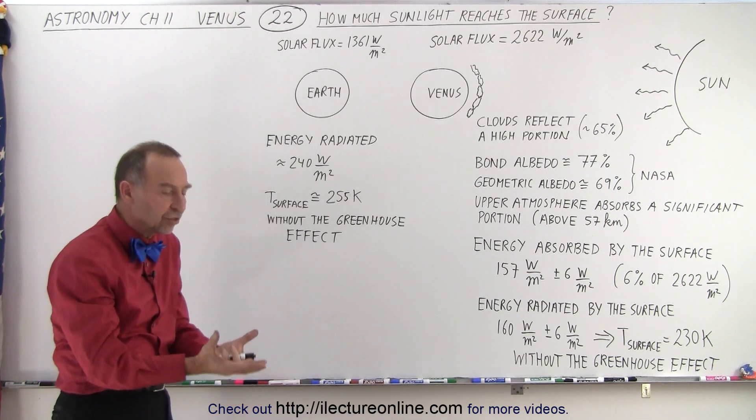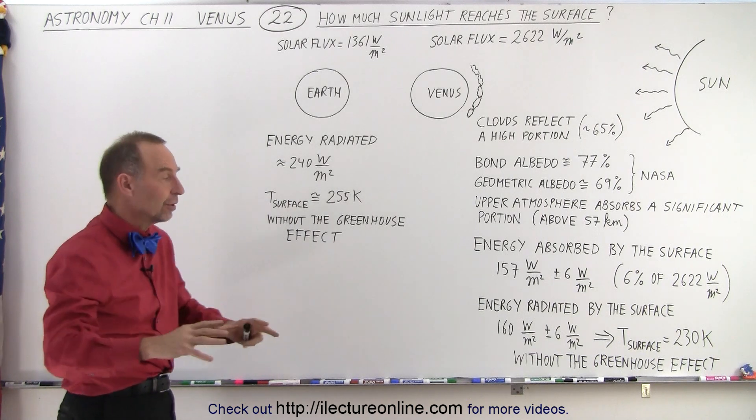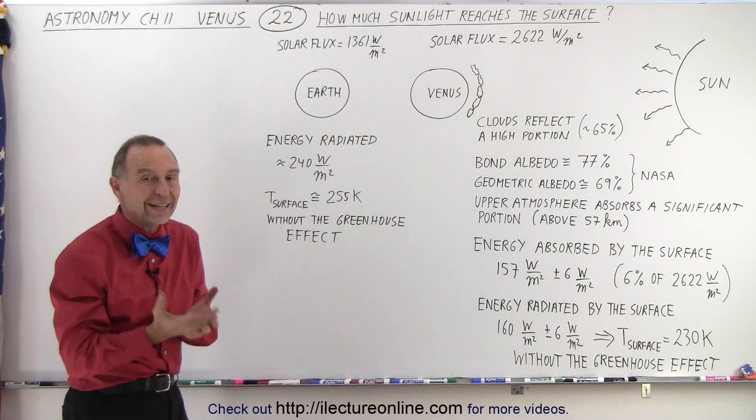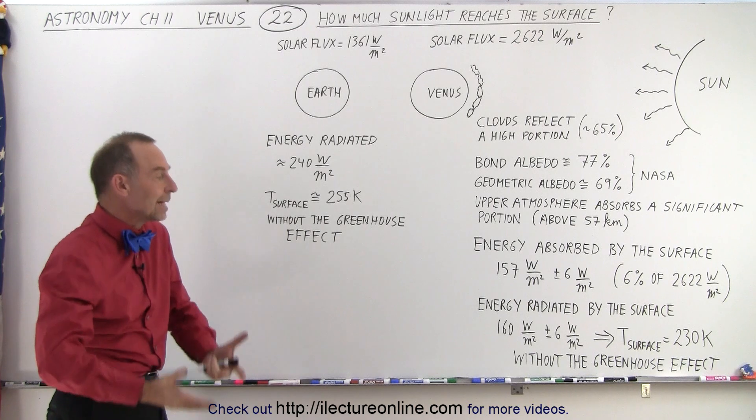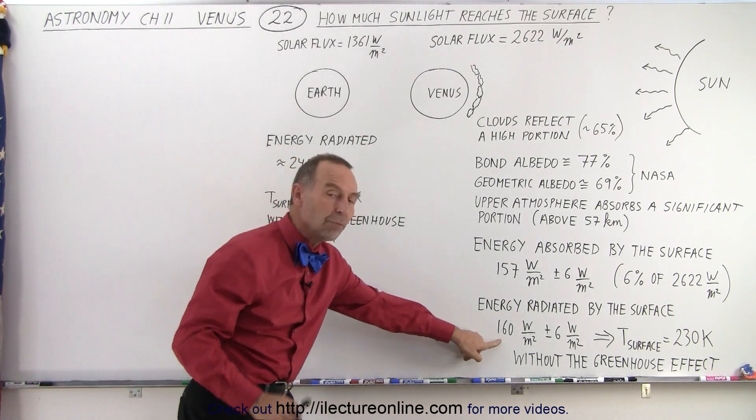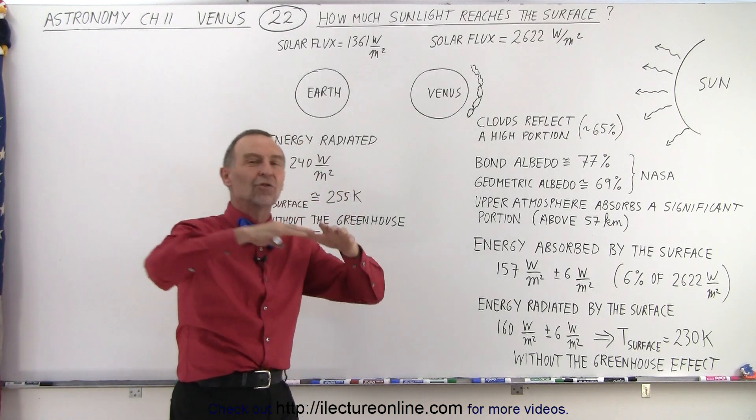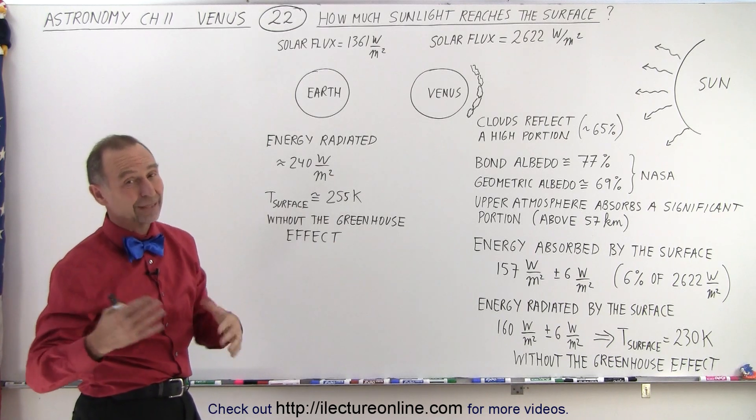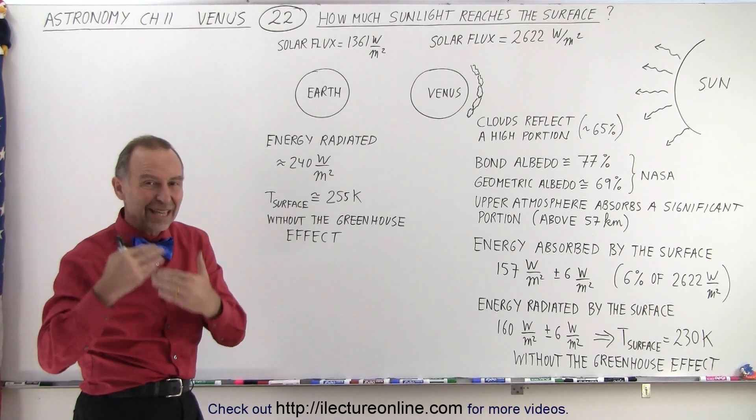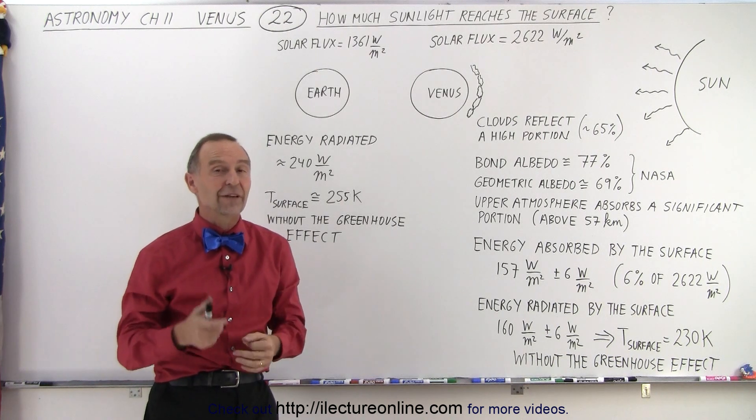So then that radiation gets caught up by the atmosphere and we'll take a closer look as to what exactly happens to that radiated energy. Why does that small amount of radiated energy make it so hot on Venus? Well, that has a lot to do with the very thick, dense atmosphere and what the atmosphere consists of.